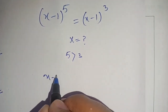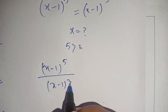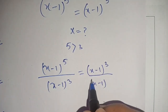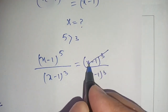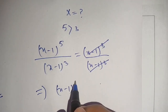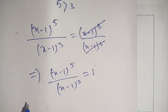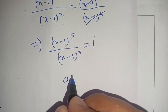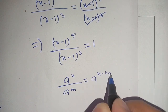We get (x - 1) raised to power 5 divided by (x - 1) raised to power 3 equals 1. We can cancel out (x - 1)^3. The left hand side is in the form a^n divided by a^m, which equals a^(n - m). Applying this identity, we get (x - 1) raised to power (5 - 3) equals 1.